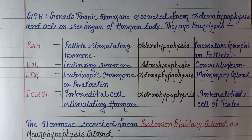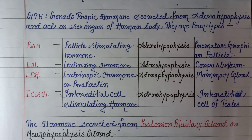Next is LTH, that is luteotropic hormone or prolactin. This is also secreted from the adenohypophysis and this hormone acts on the mammary gland. Next is ICSH, that is interstitial cell stimulating hormone. It is secreted from the adenohypophysis and the target organ is the interstitial cell.